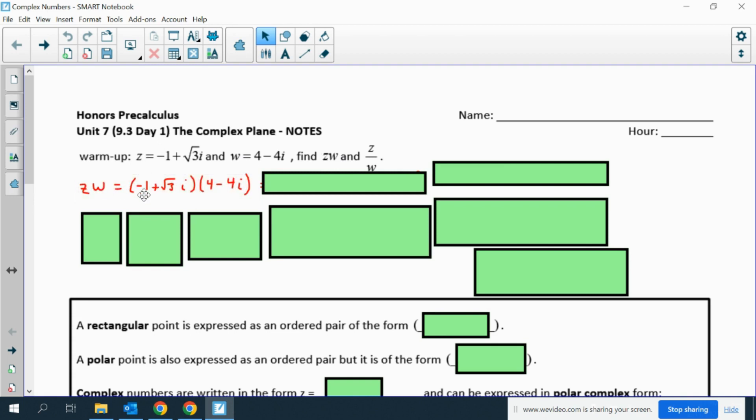When you multiply complex numbers, you use the distributive property, so you multiply those four things together. You end up with negative 4 plus 4i plus 4 root 3 i minus 4 root 3 i squared. Remember that i squared is negative 1, so this ends up being negative 4 plus 4 root 3. Then combine the two i terms to 4 plus 4 root 3 i, factoring i out of these two terms.